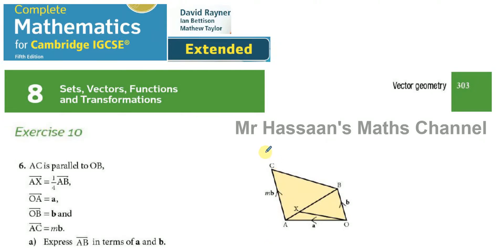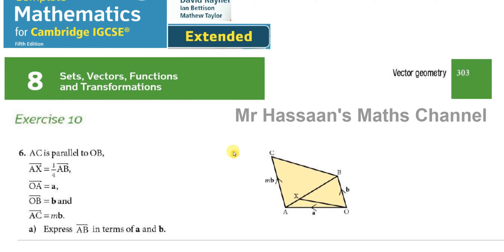Welcome back, this is Mr. Hassan's Maths Channel. In this video I'm going to be going through a question from an IGCSE book — the David Rayner Oxford Complete Mathematics for Cambridge IGCSE Extended Version — from chapter 8, which covers vectors. This is exercise 10. I've been asked to answer a number of questions from this exercise, but I'm going to answer one of them because most questions follow the same kind of pattern.